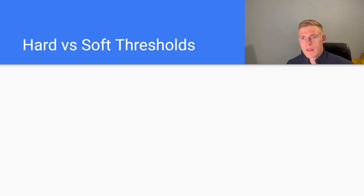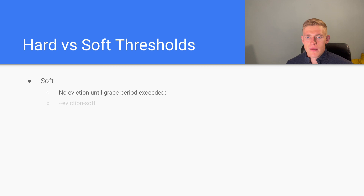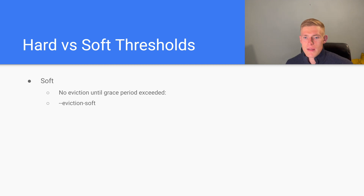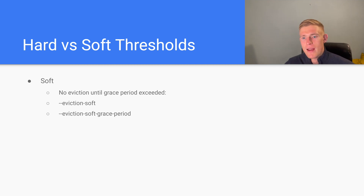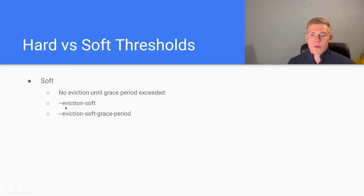There are two types of eviction thresholds: hard and soft. With soft eviction thresholds, no eviction will happen until a grace period is exceeded. When specifying soft eviction thresholds, we pass --eviction-soft in combination with --eviction-soft-grace-period. That grace period is the time between breaching the threshold and evictions actually starting — we pass the threshold to one parameter and a time value to the grace period parameter.